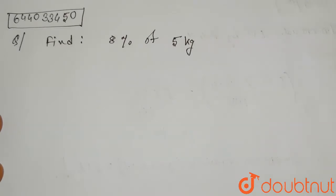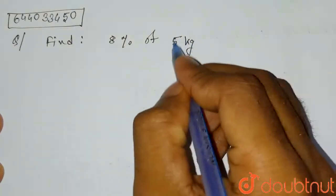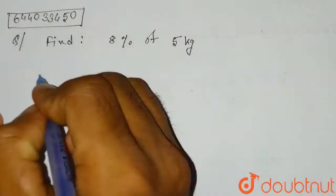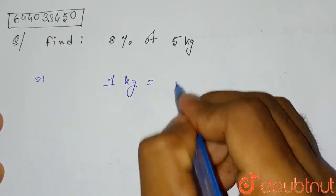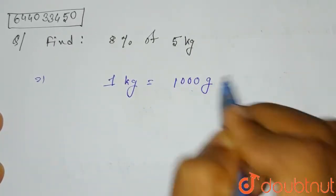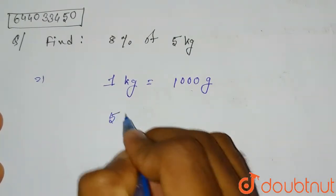So first of all we'll convert this 5 kilogram into grams. We know that 1 kilogram is equals to 1000 gram, so similarly 5 kilogram will be equals to 5 into 1000 gram.